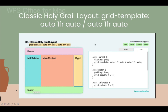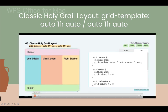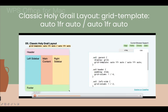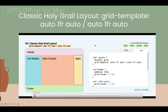We also have the classic holy grail layout. Here we see how the main content increases and reduces, but the left and right sidebars remain intact. Based on how much text you put into them, they increase or decrease accordingly.